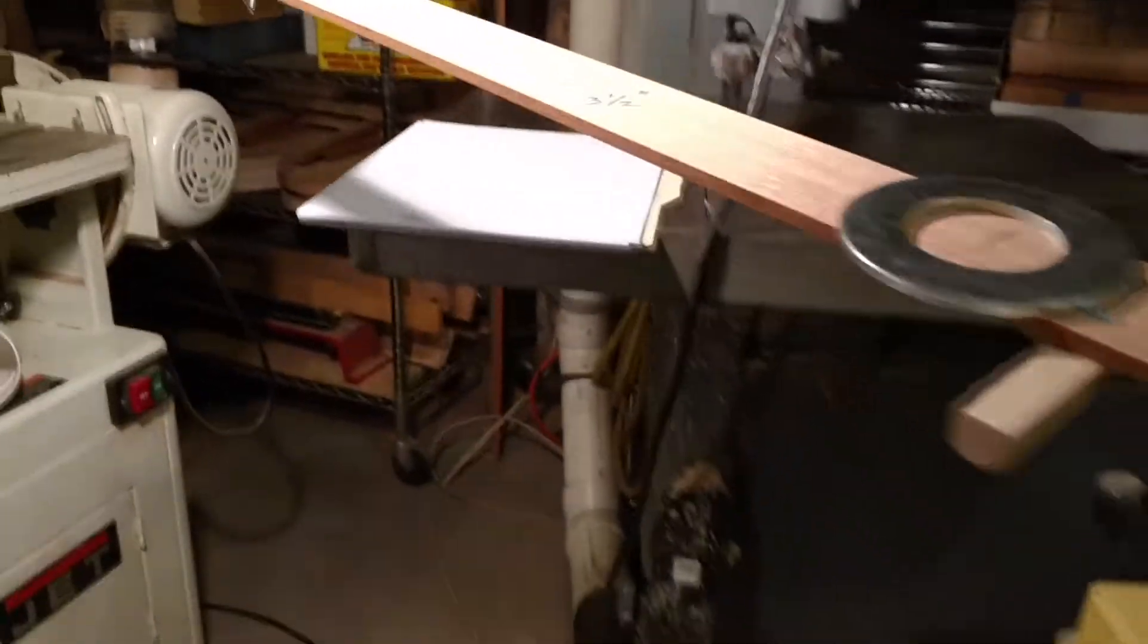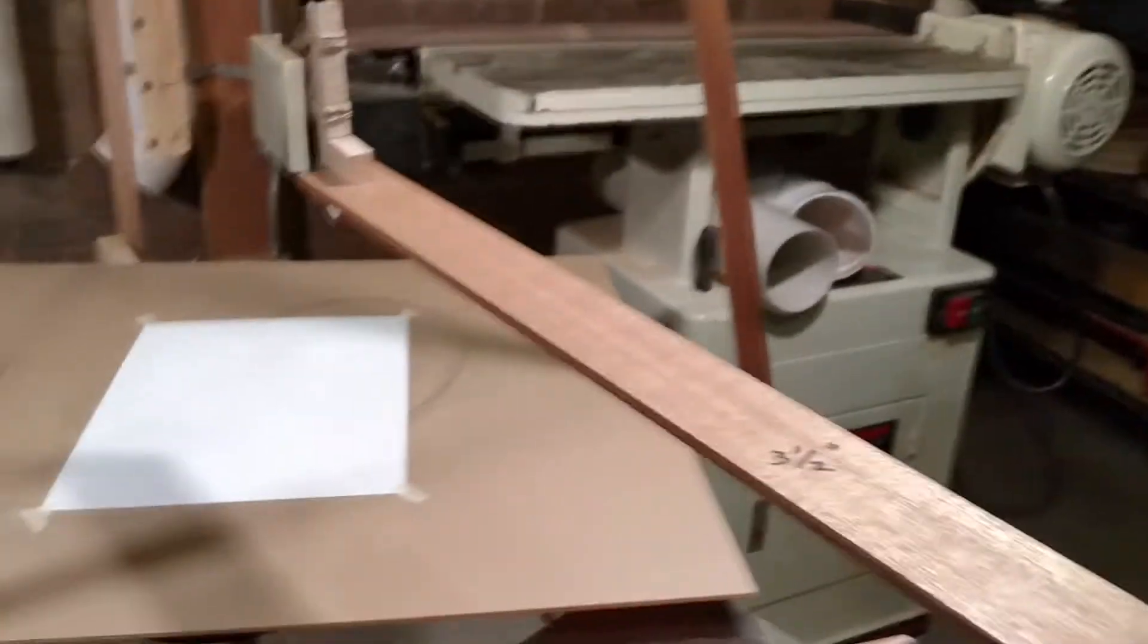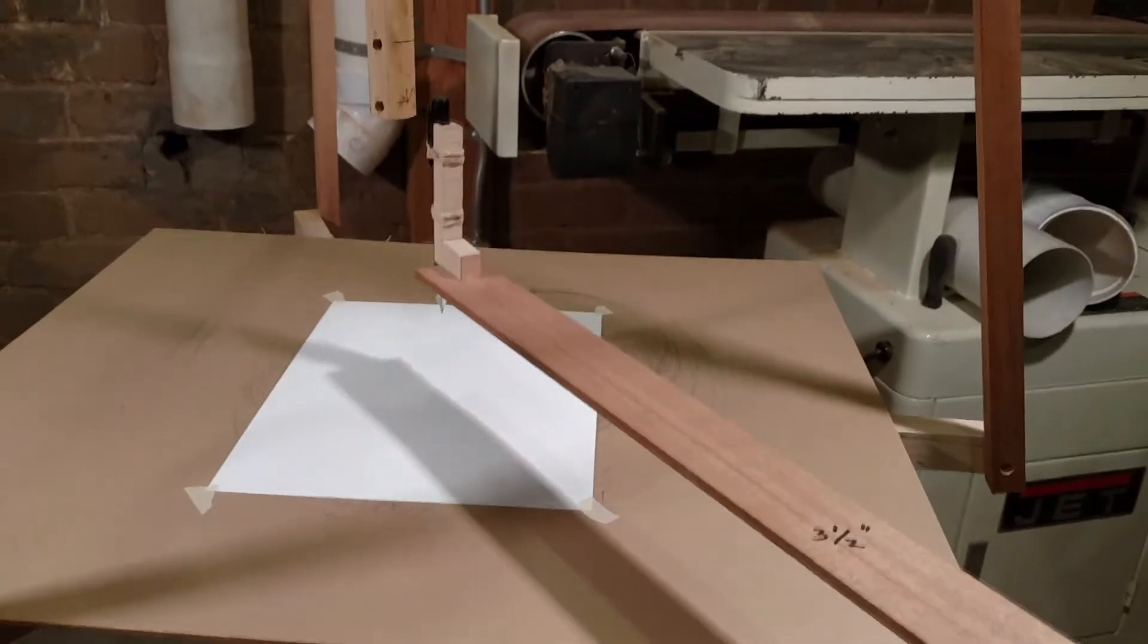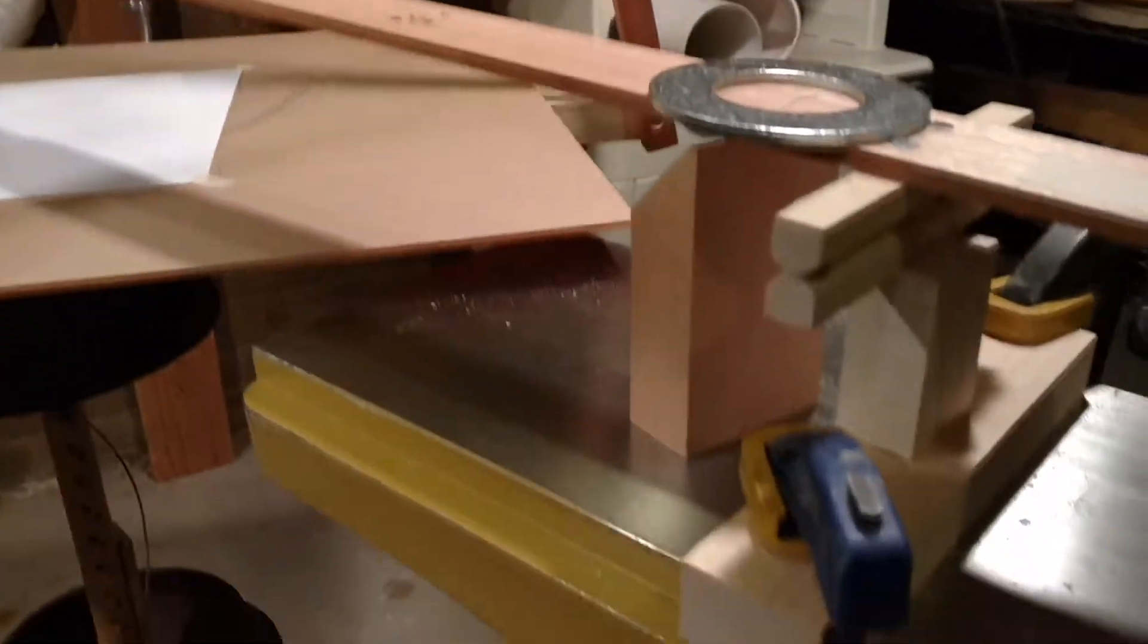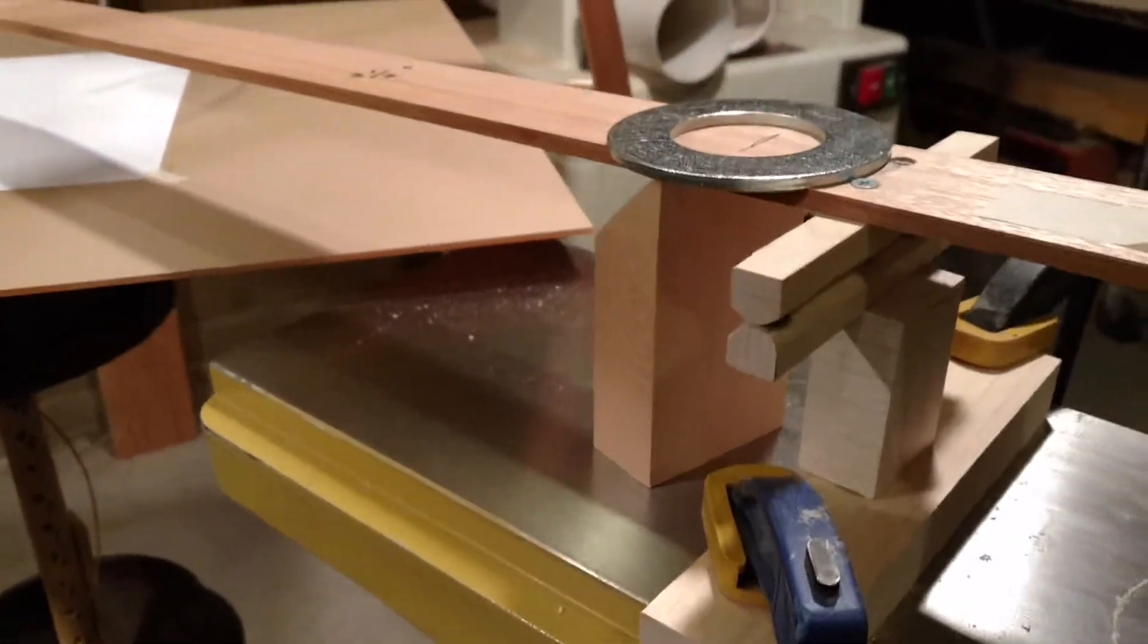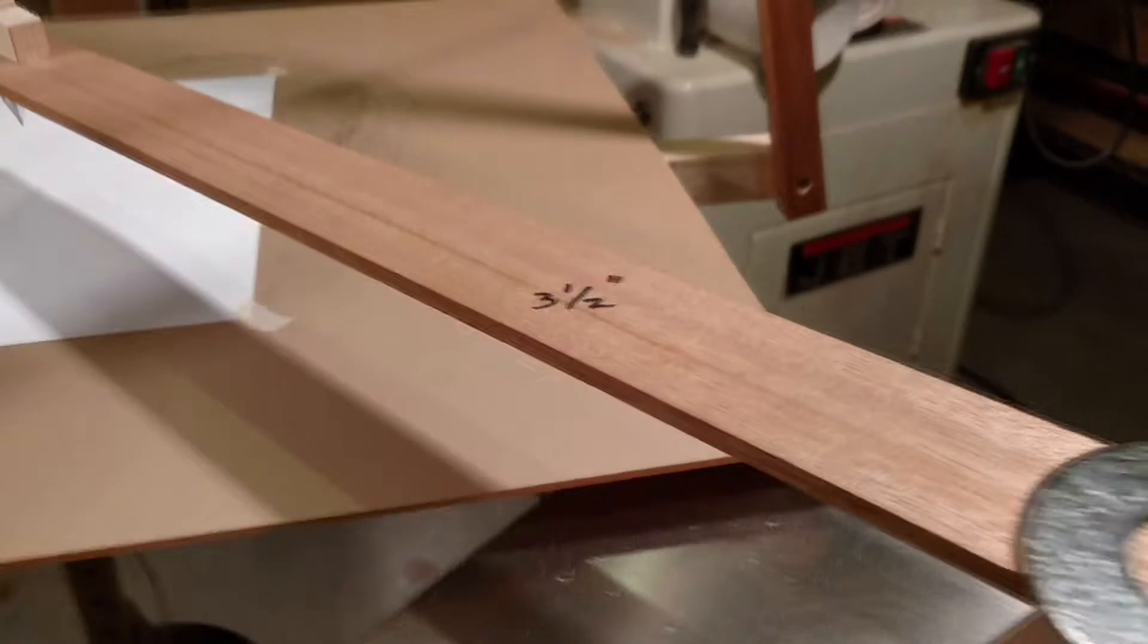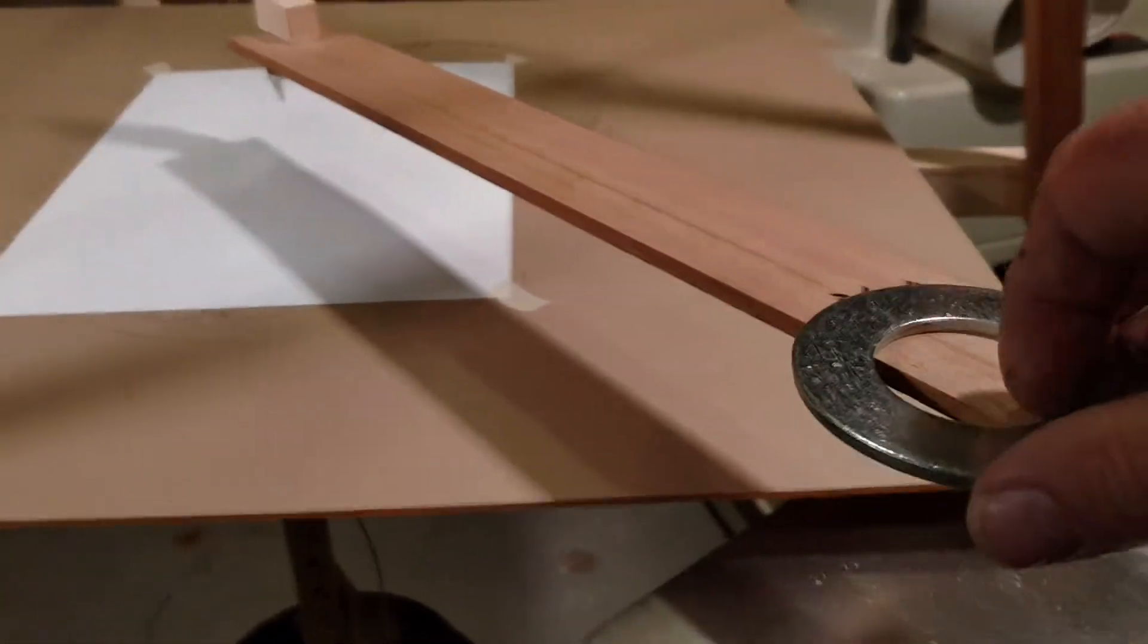This is the arm I'm using. It's got a couple washers that I can move around to give it different weights. So here's the arm, it pivots in on this little hinge here. The weights can be adjusted back and forth for different pen weights.